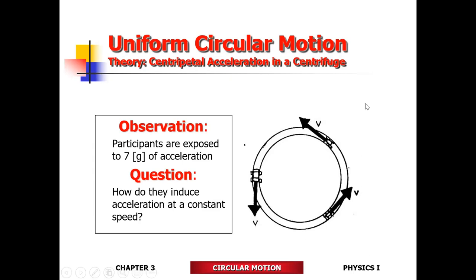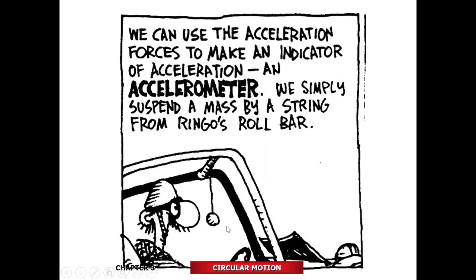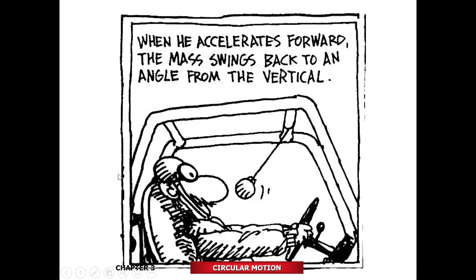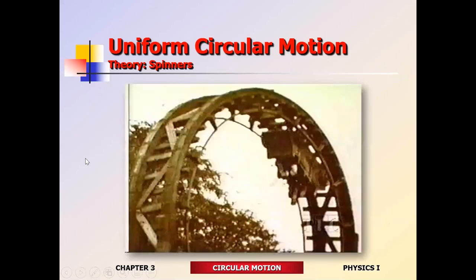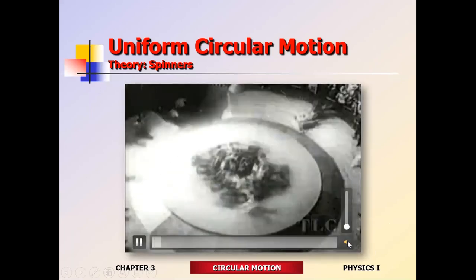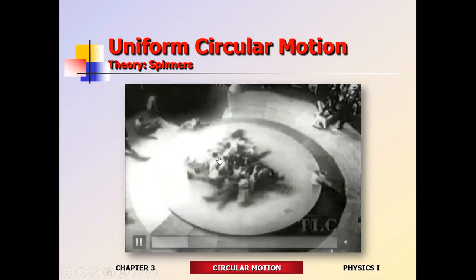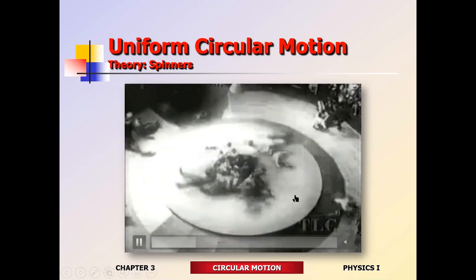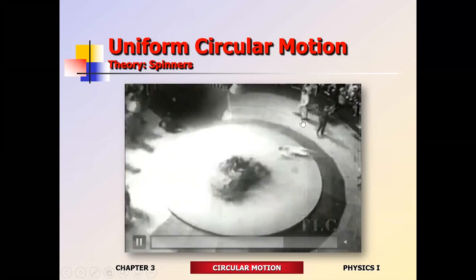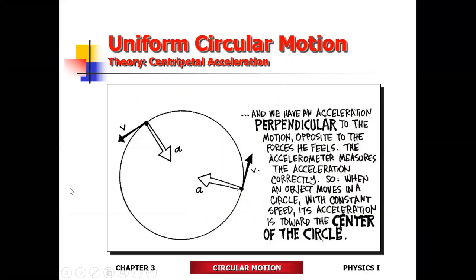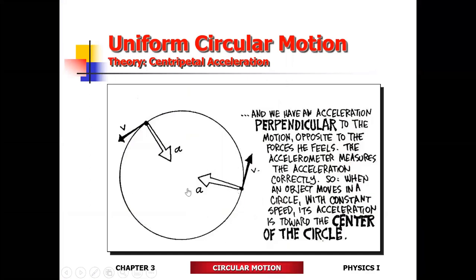Where do we get these definitions from? We get them from real life — the mathematical representation of real life is these formulas. How do we know that change in direction is acceleration? Think about a car accelerating: unstrapped objects move in the opposite direction. Braking causes objects to move forward. So speeding up is acceleration, slowing down is acceleration, and changing direction is also acceleration. In circular motion, unstrapped objects — in this case, people — move away from the center. That means the acceleration is directed toward the center.